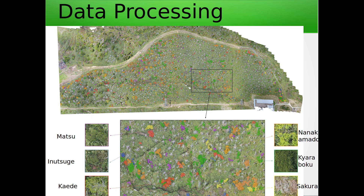Here in Yamagata Prefecture we collected data from many sites, and here you have an orthomosaic of one of those sites. The experts in the forestry department in the Faculty of Agriculture of Yamagata University annotated by hand the position of each of the six species of subalpine bushes visible in that site.